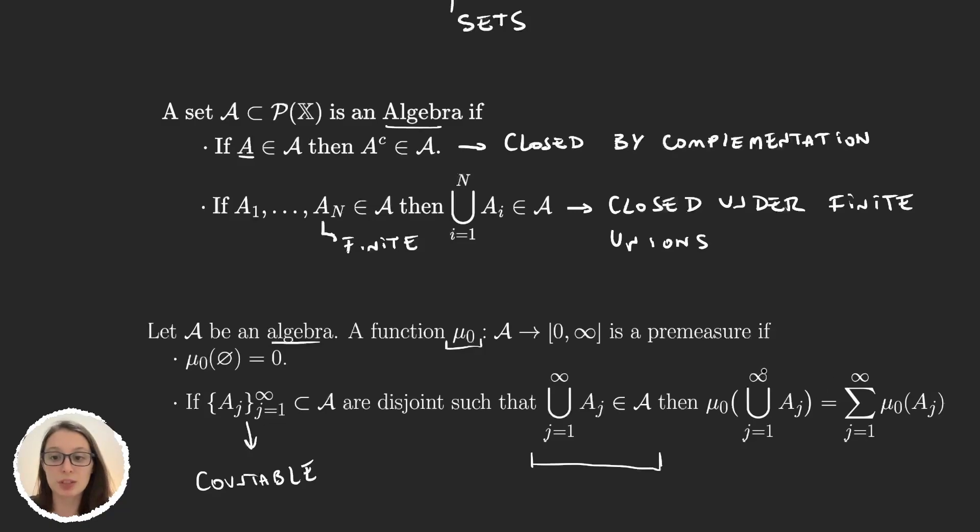But I want to emphasize this very important property. The second property of a function being a premeasure says, if we grab a countable sequence for which the union is in the σ-algebra, then the premeasure is additive. Because if the countable union is not in the σ-algebra, then we don't even have the right to write this. Because μ₀ of the union, well, we need the union to be in our domain, that is, in the algebra. So it's very important that here, the hypothesis are, whenever you grab a sequence for which the union is in the σ-algebra, then your premeasure is additive.